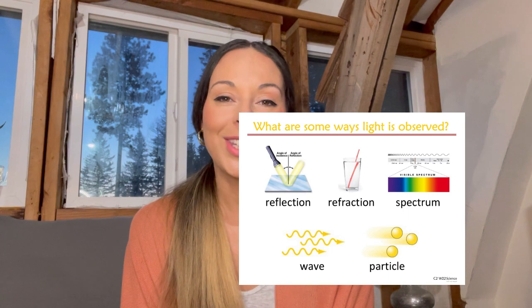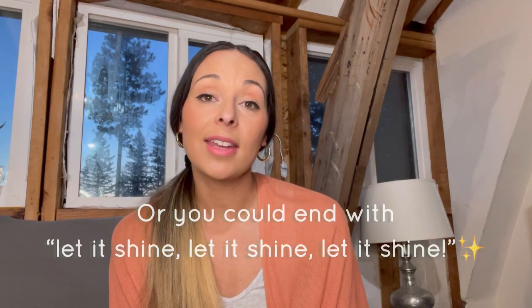For science, we have 'what are some ways light is observed?' We'll print out a visual aid — I'll link it in the description — and sing to the tune of 'This Little Light of Mine,' pointing to each type. So: what are some ways light is observed? Reflection, refraction, spectrum, wave, particle. These are some ways light is observed.